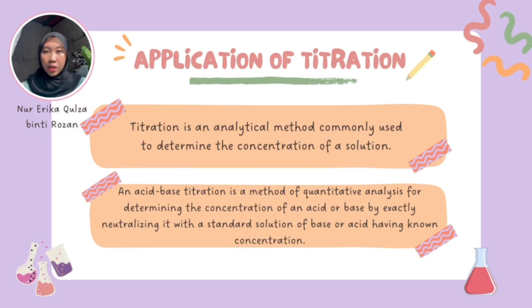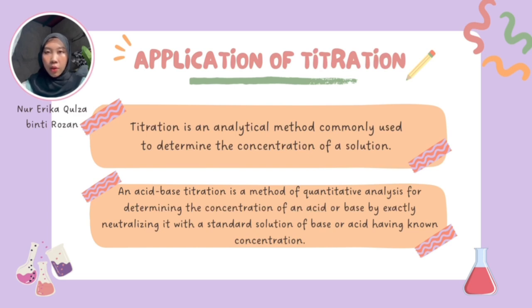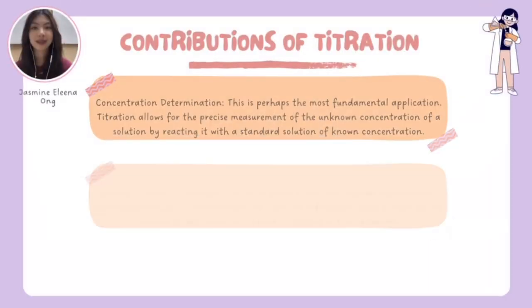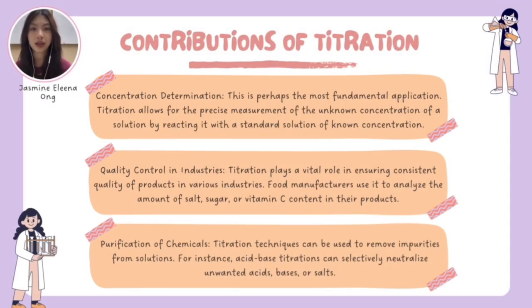Now we come to the applications of titration. Titration is an analytical method commonly used to determine the concentrations of a solution. An acid-base titration is a method of quantitative analysis for determining the concentration of an acid or base by exactly neutralizing it with a standard solution of base or acid having known concentration. Titration is a workhorse technique in chemistry with a wide range of contributions across various fields. For instance, titration is applied to determine concentration — perhaps its most fundamental application.